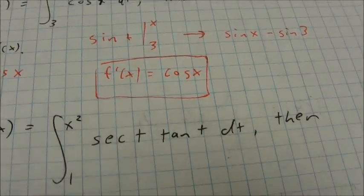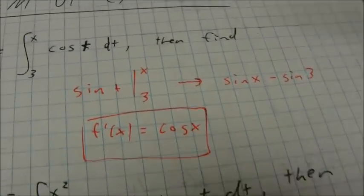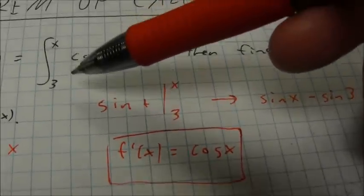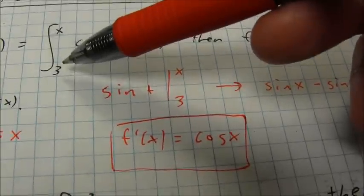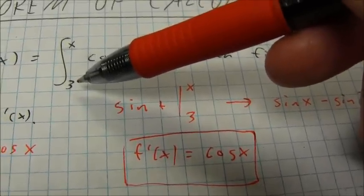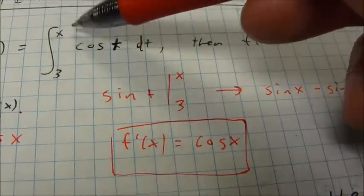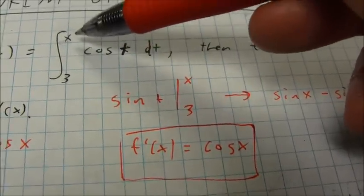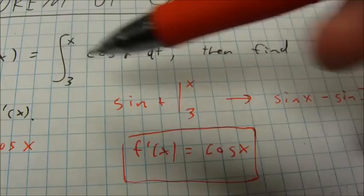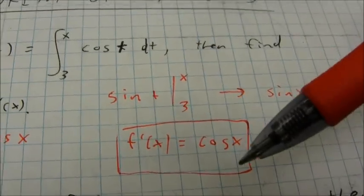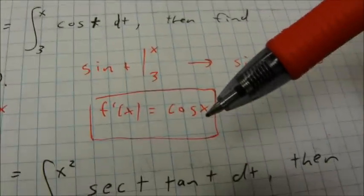So the point is, technically you can just take — and it doesn't even matter if that lower bound is a 1, a 3, or a 2,000. The only thing that matters is this variable right here, and that's what you're going to end up with.